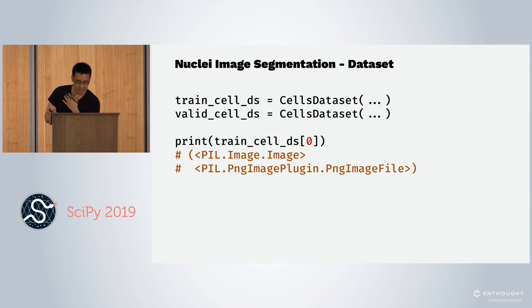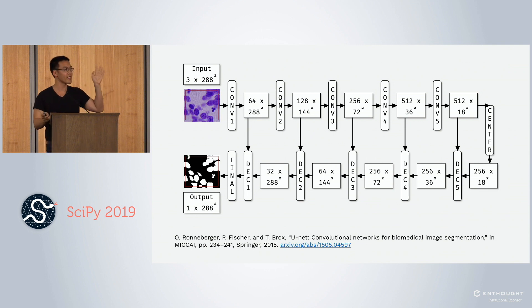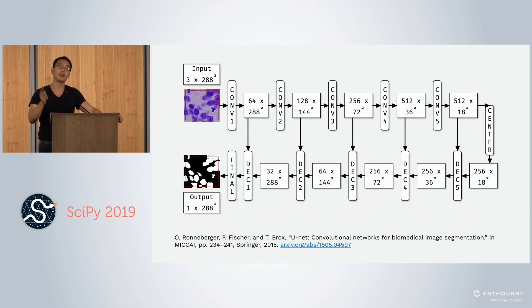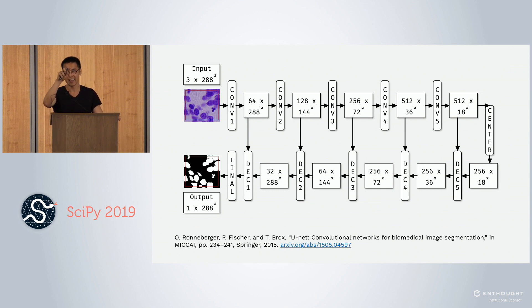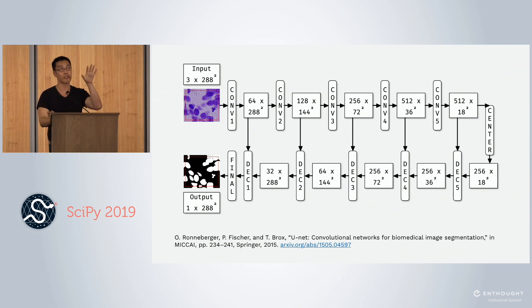The neural network we're going to train is the UNet. UNet takes an input — in this case a 3×288 image — gets features by going down and up the network, and outputs a mask. The very cool thing about UNet is that it retains spatial information by passing skip connections straight across as the features scale up.